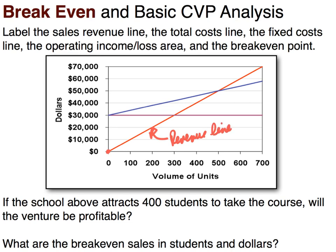The next line we'll label is the blue line. The blue line hits the y-axis at $30,000 and it increases as our activity increases. This is our total cost line, because it includes both fixed and variable costs that we talked about in the prior series of videos.